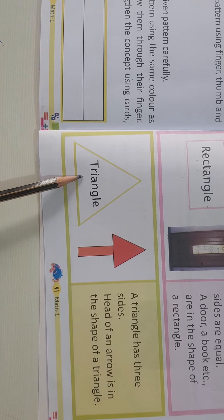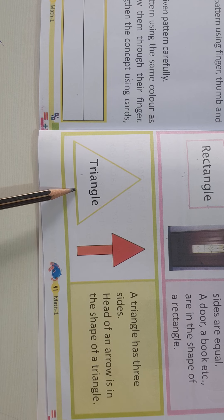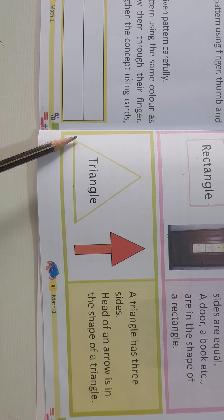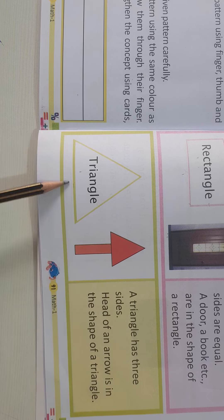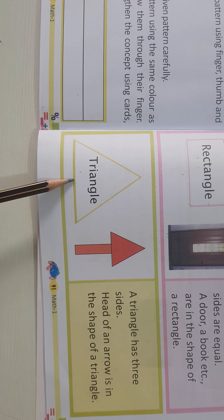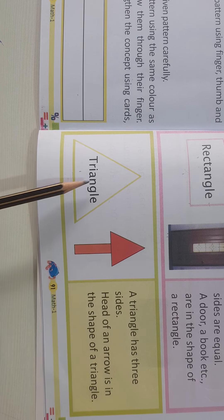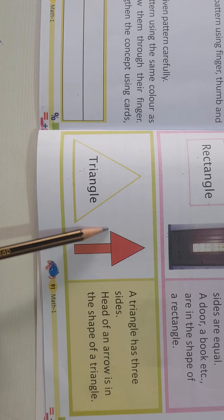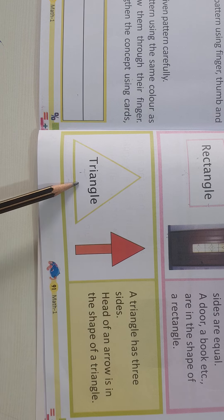Now see, this is triangle. In a triangle, children, there are 1, 2, 3 sides. See — this is one line, this is the second line, and this third line we count as 3. So a triangle has 1, 2, 3 sides. The shape with 3 sides is called triangle. For example, when we draw an arrow, the upper part looks like a triangle shape — that is triangle.